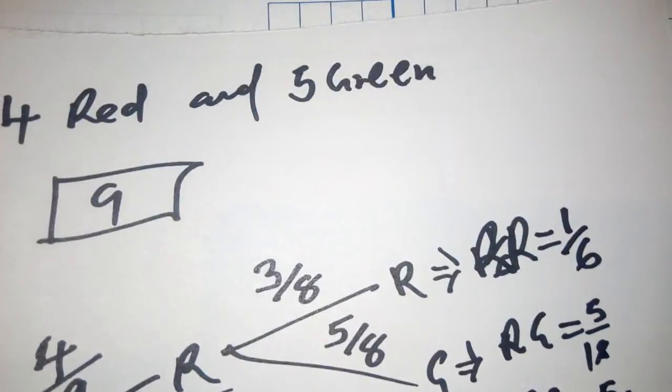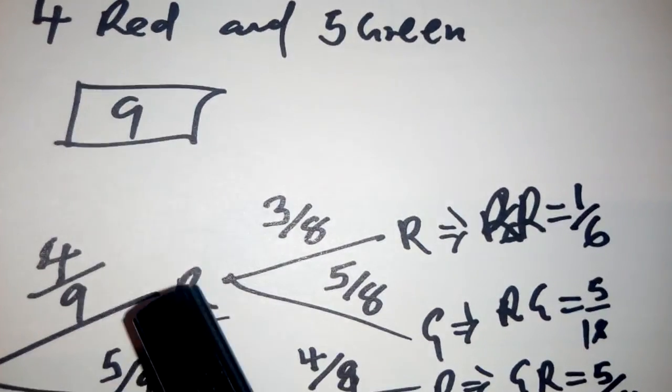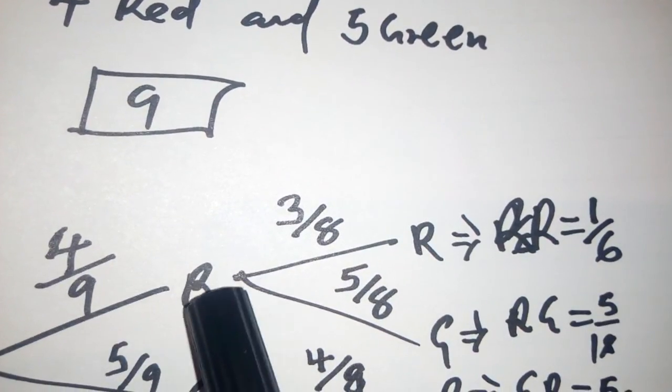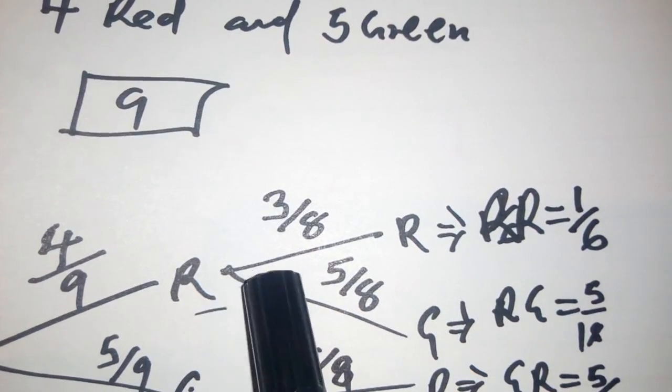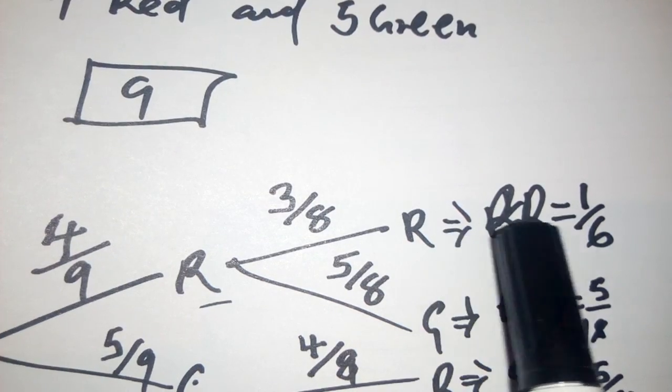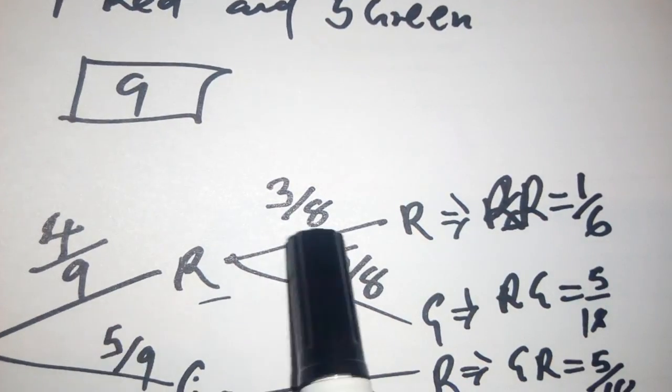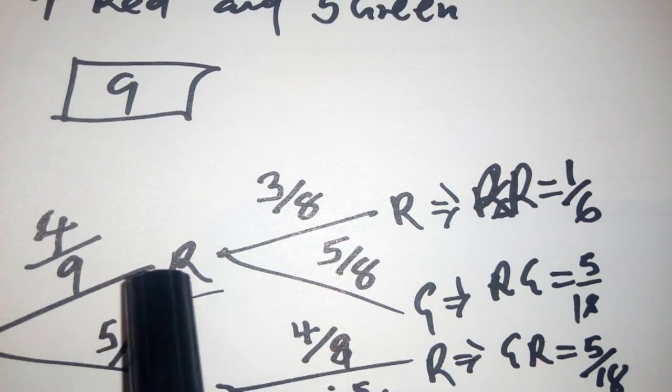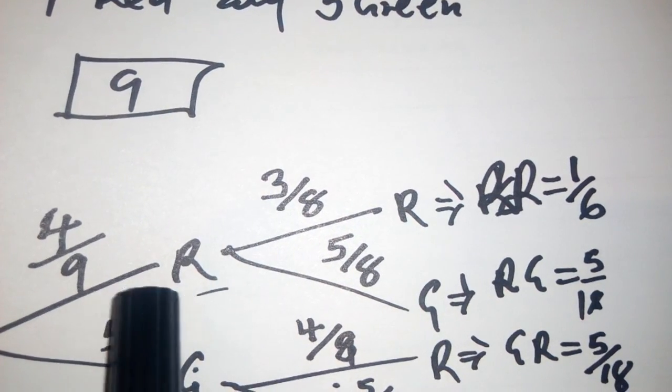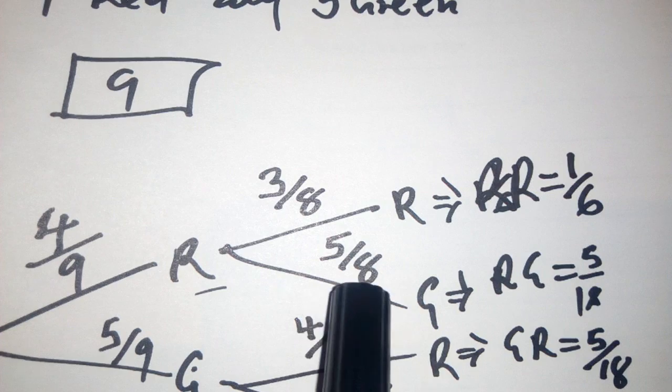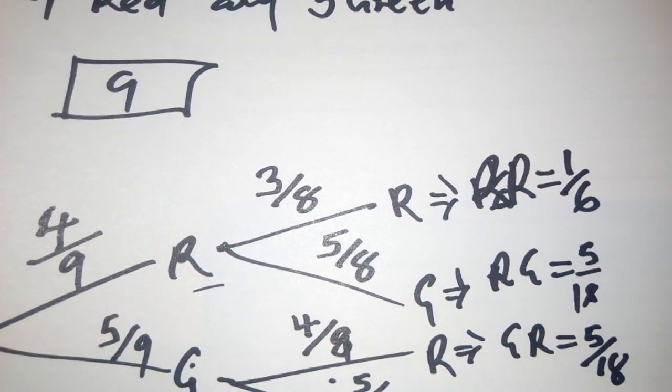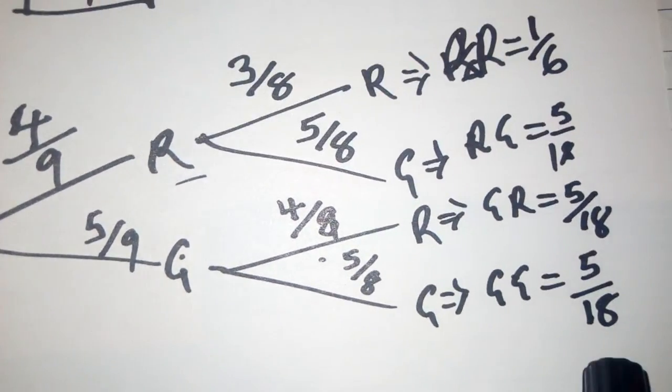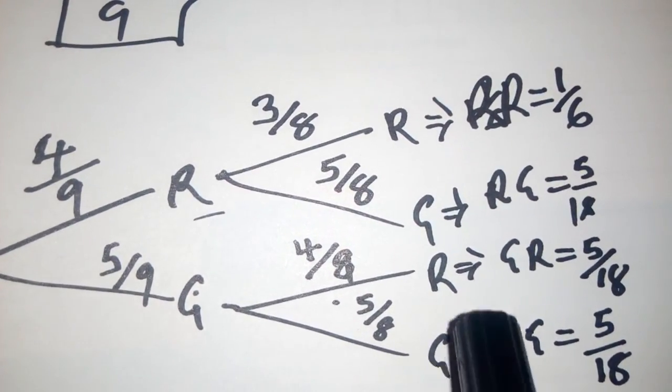So how am I getting these probabilities? I'm multiplying this probability by this probability, meaning the probability of getting red, red. First time you get red, second time you get red, it's 1 over 6. You multiply their probabilities. Red and green is here. Green and red is here. Green, green is here. When you add these probabilities, they should give you 1.